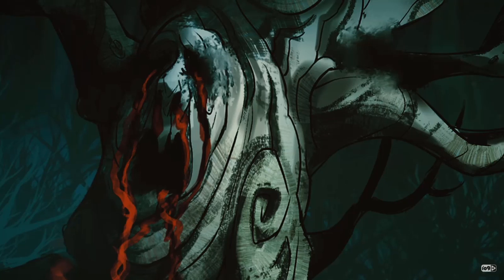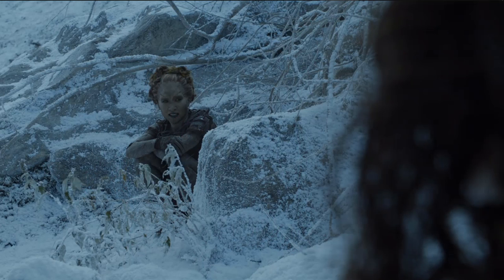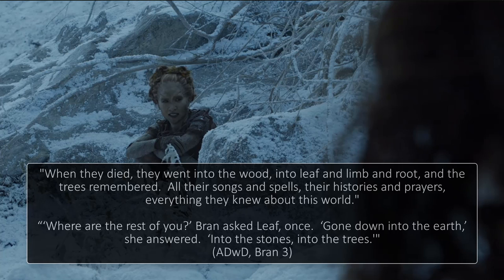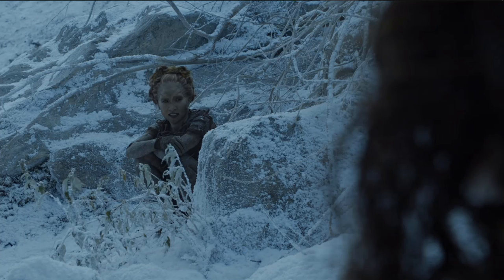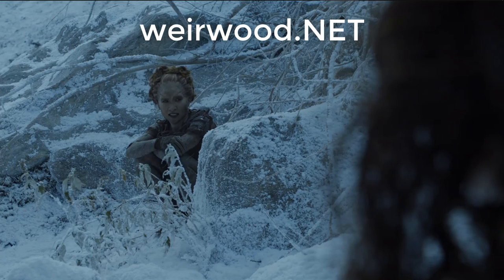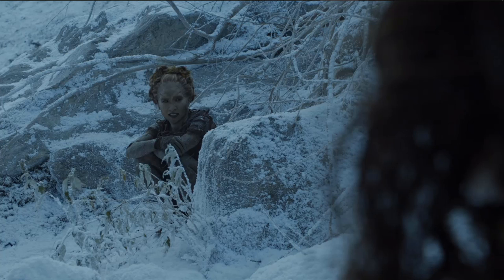As you probably know by now, there is a concept called weirwood.net. Basically, the weirwood trees are like a database of information. Leaf — the name that Bran and company gave to one of the children of the forest, otherwise known as the singers or those who sang the Song of Earth — tells Bran in the books that when the children die, their songs and spells, their histories and prayers, everything they knew about this world flows into nature. Not just weirwood trees, but into the Earth in general, into stones, into trees. Fans, including myself, often call the database weirwood.net, but that's misleading. The database is Mother Nature as a whole.